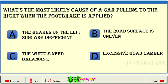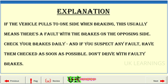What's the most likely cause of the car pulling to the right when the foot brake is applied? A: brakes on the left side are inefficient. B: the road surface is uneven. C: the wheels need balancing. D: excessive road camber. The correct answer is A: brakes on the left side are inefficient. Explanation: If the vehicle pulls to one side when braking, this usually means there's a fault with the brakes on the opposing side. Check your brakes daily and if you suspect any fault, have them checked as soon as possible. Don't drive with faulty brakes.